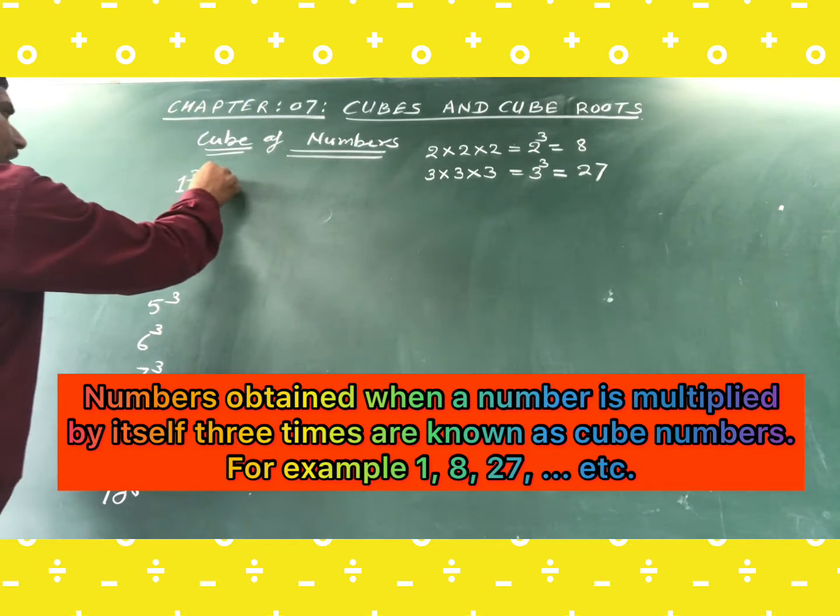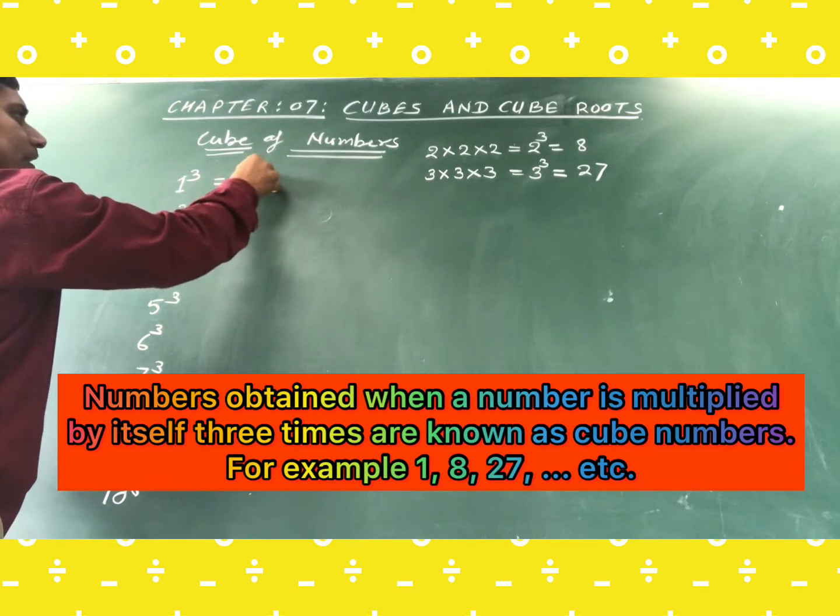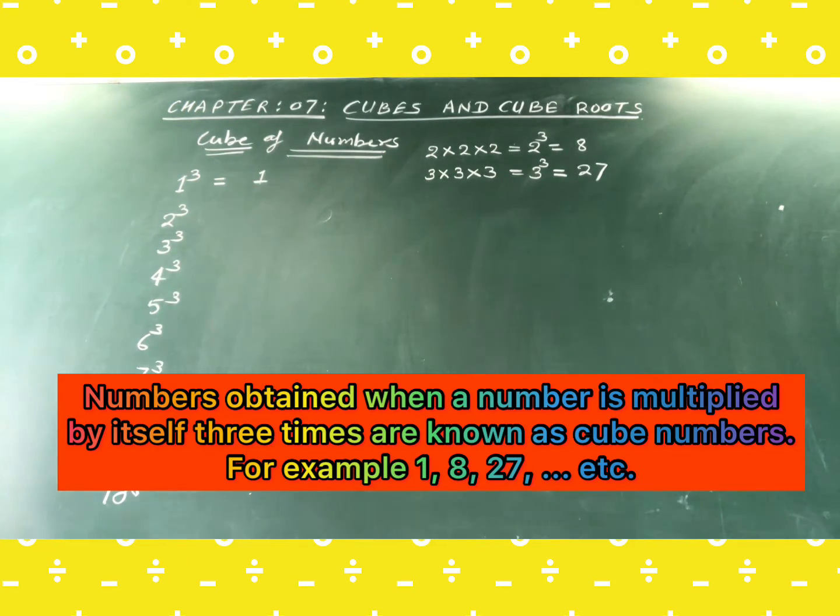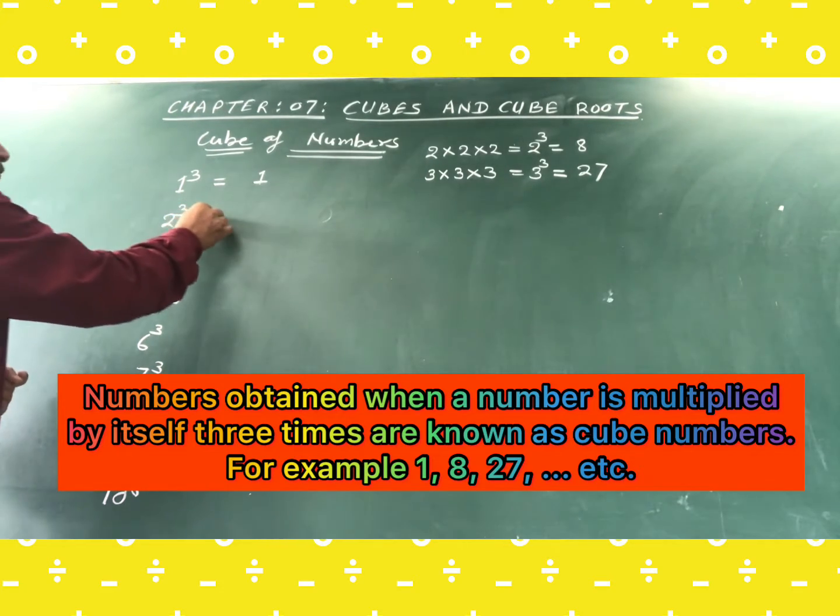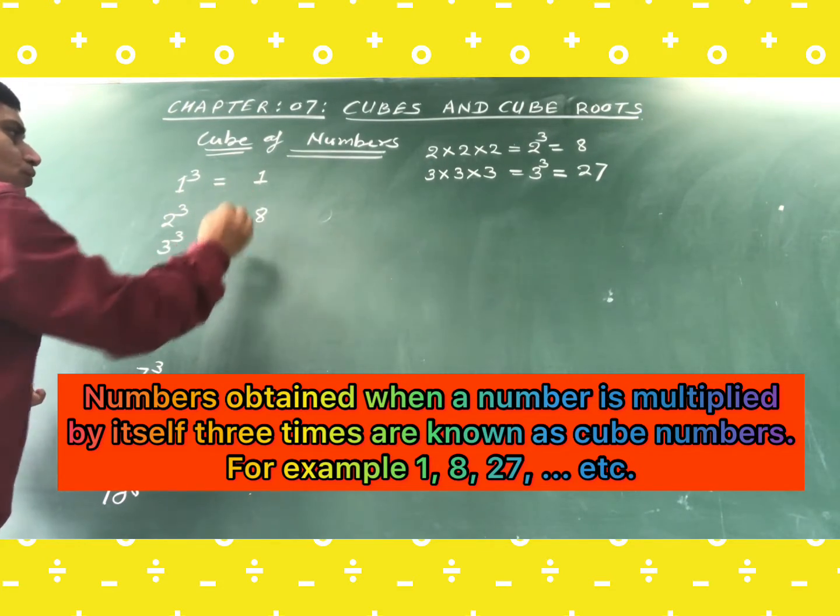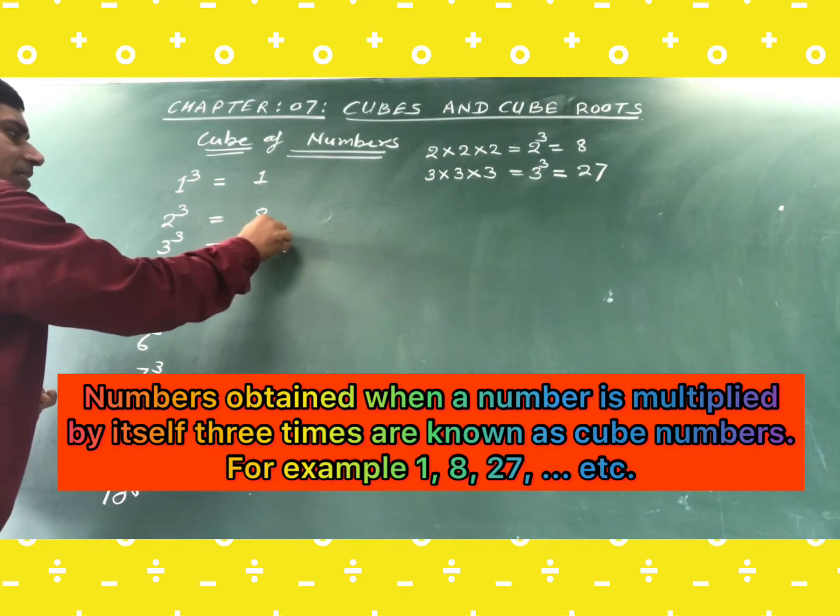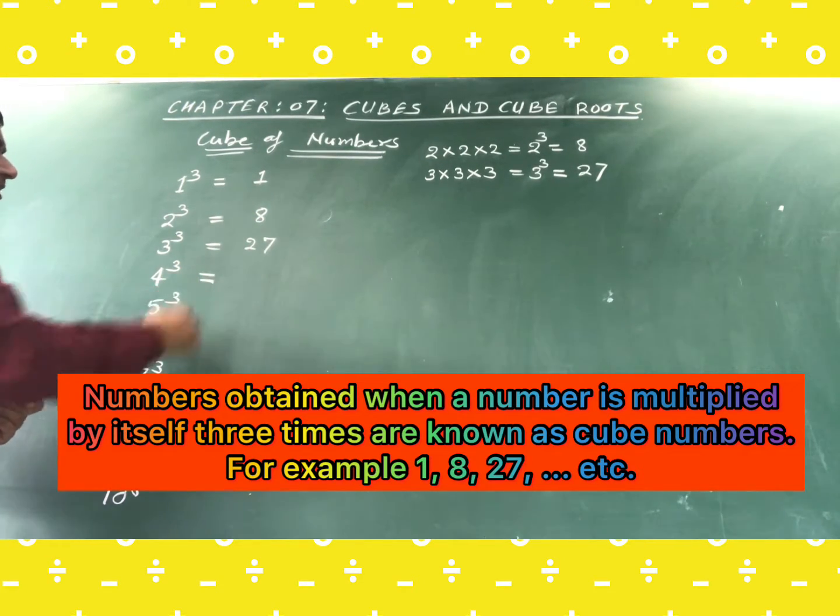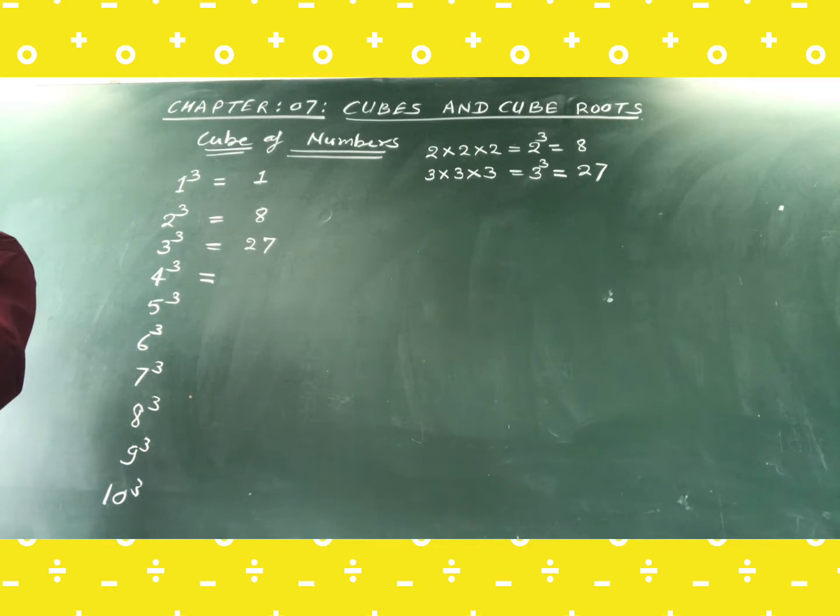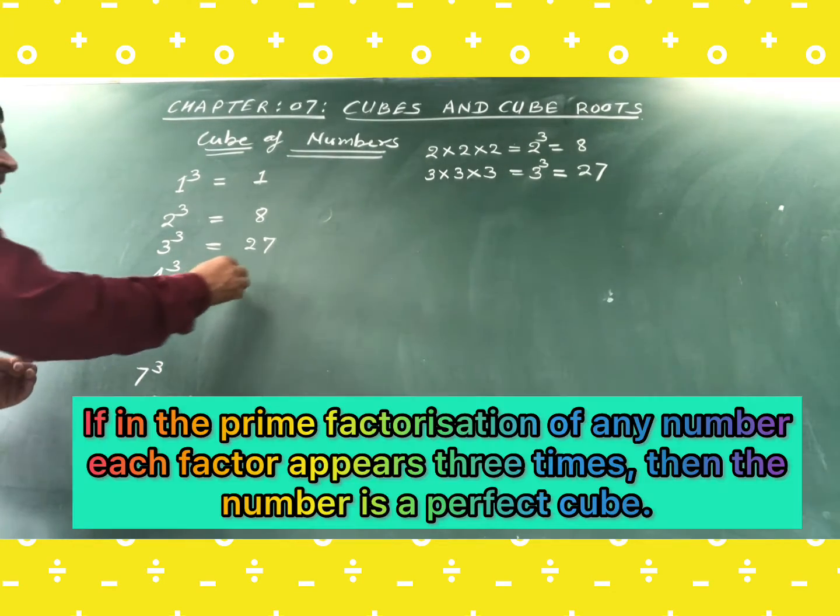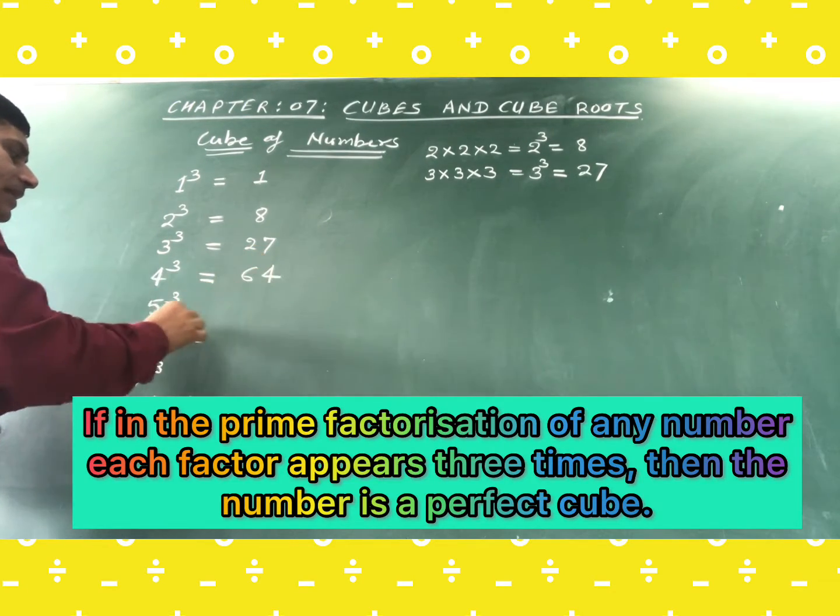Here, 1 cube means 1 only, because 1 is multiplied thrice, that is 1 into 1 into 1, you will get the result 1. And 2 cube means 2 into 2 into 2, that is 8. And this is 27. And once again, 4 into 4 into 4, so you will get it as 64.